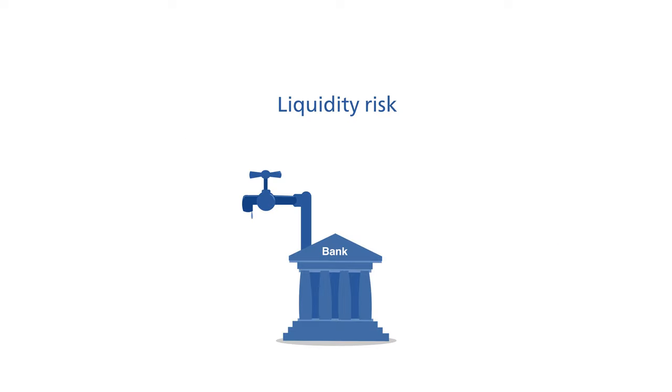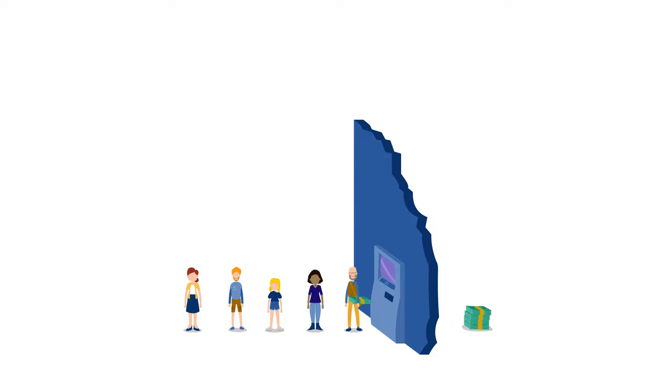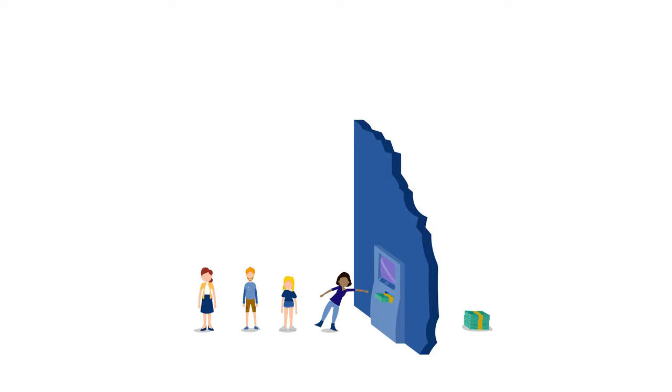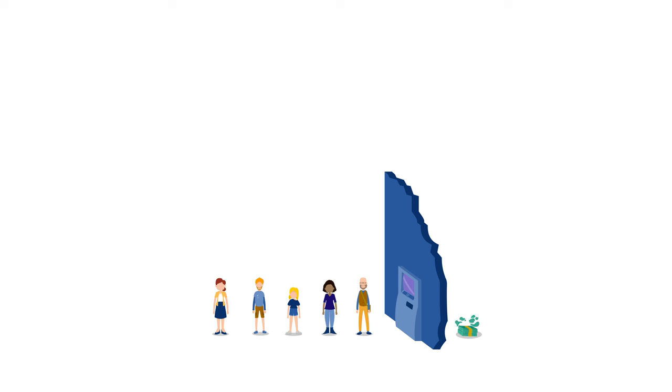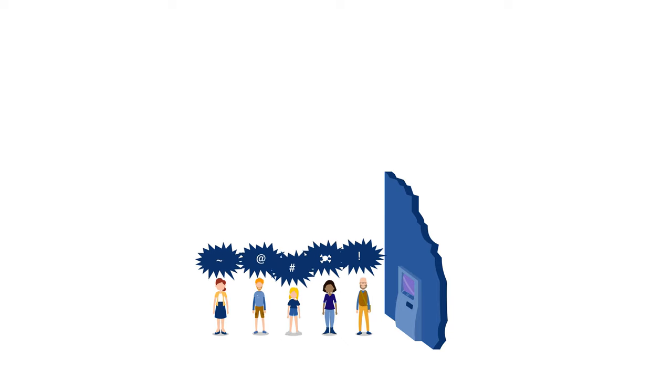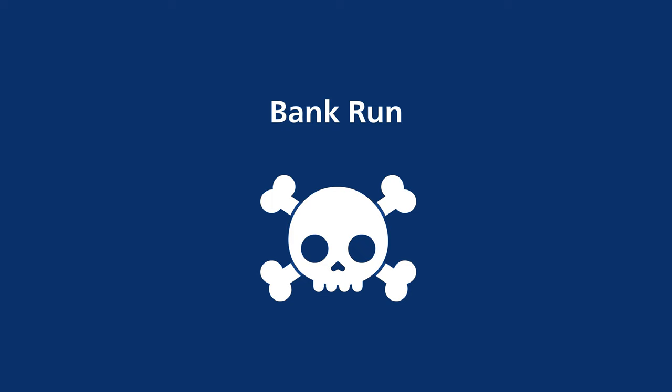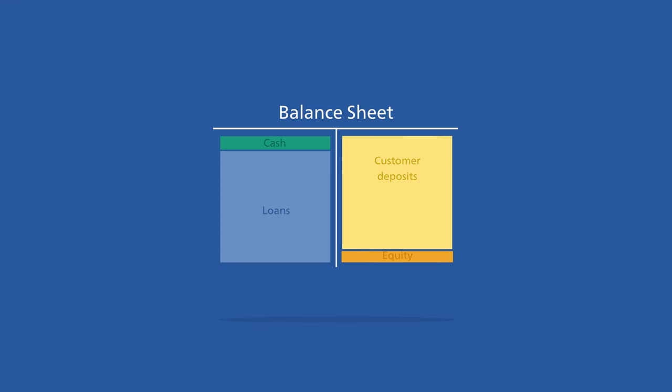The liquidity risk is particularly high for banks because of their business model. It is a consequence of the fact that a bank's customers have the right to withdraw their money at any time, while banks use that money as a basis for loans that cannot be converted into cash immediately. Banks only keep a small amount of cash because it does not earn any interest. This exposes banks to the risk of a bank run — if a large number of savers want to withdraw their money at the same time, the cash is not enough. When customers are worried their bank is in distress, they all withdraw at once and, without being aware, they trigger the very bank failure they so fear.